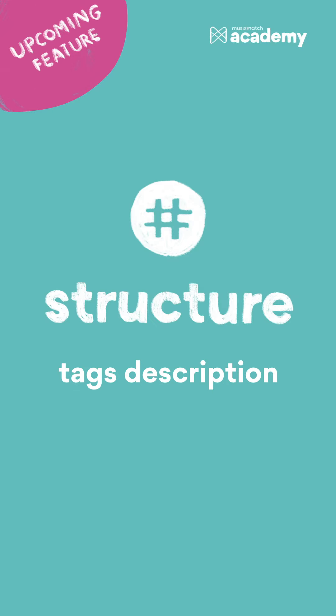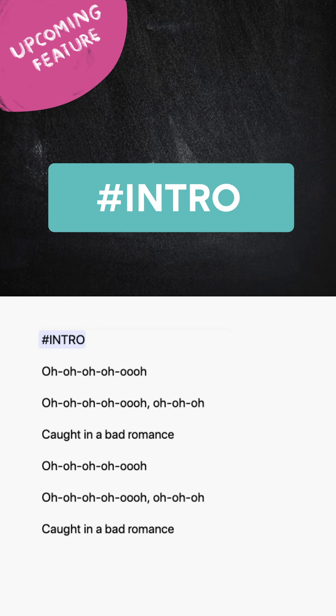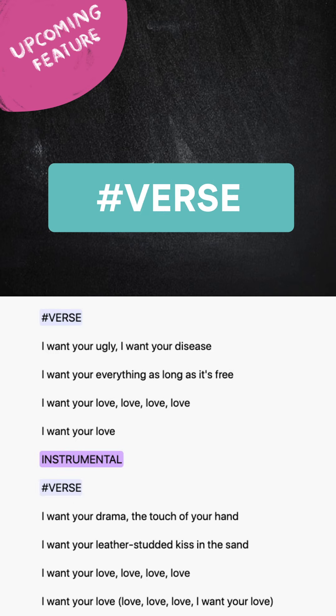Structure tags description. Intro: This is located at the beginning of the song. It can have a different melody from both verses and chorus. Verse: Roughly corresponds to a poetic stanza. Generally, there are multiple verses in a song, and they usually have different lyrics, even though the melody will likely be the same.